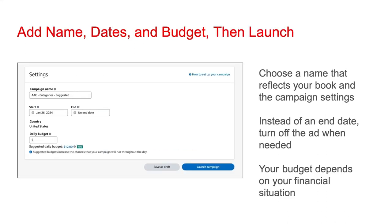We're now at the end of the process. I recommend you pick a name that reflects your book title and the campaign settings. You can put in a start date and an end date. What I like doing is not putting in an end date and simply turning off the ad when needed. However, keep in mind: if you select no end date and you do not come back, that ad will continue running and you'll continue to be charged per click, even if it isn't performing well. So if you think you might forget, put in an end date. Lastly, you're going to be asked to put in a daily budget — which, of course, depends on your financial situation.